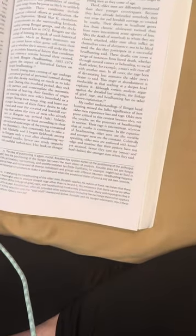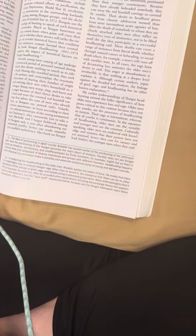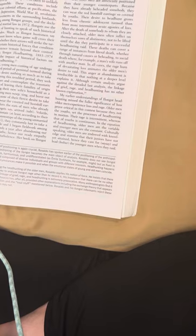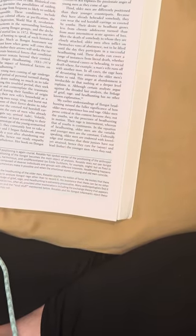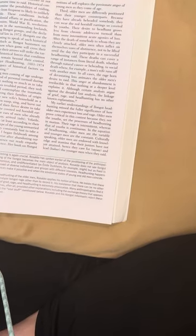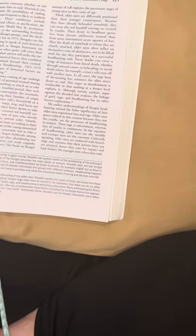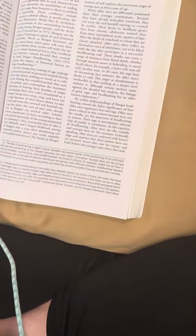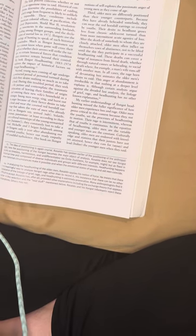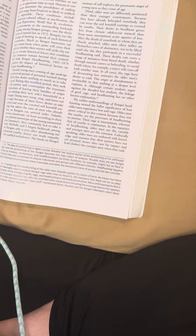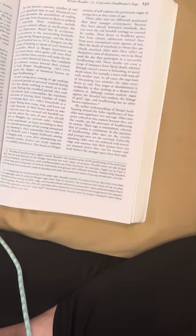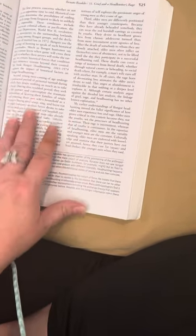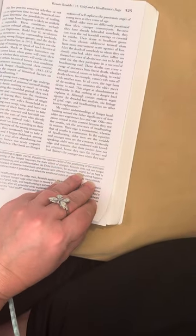Young men weep, sing, and burst out in anger because of their fierce desire to take a head and wear the coveted red hornbill earrings that adorn the ears of men who already have, as Ilongots say, arrived. Volatile, envious, passionate, at least according to their own cultural stereotype, the young unmarried man constantly lusts to take a head. Michelle and I began field work among the Ilongots only a year after abandoning our unmarried youth, hence our ready empathy with youthful turbulence. Her book on Ilongot notions of self explores the passionate anger of young men as they come of age. Third, older men are differently positioned than their younger counterparts. Because they have already beheaded somebody, they can wear the red hornbill earrings so coveted by youths.